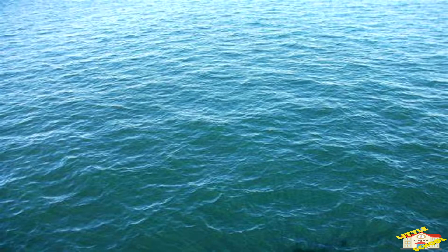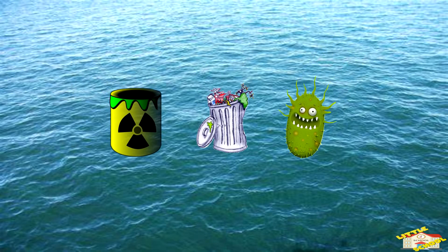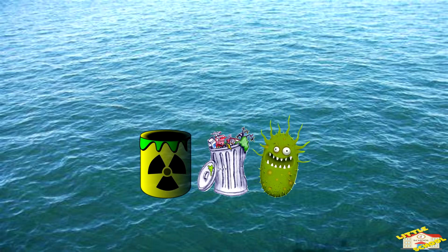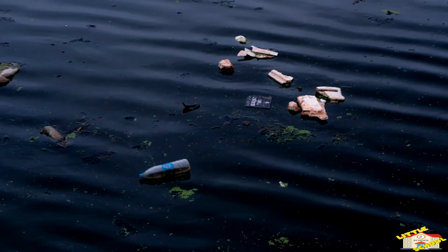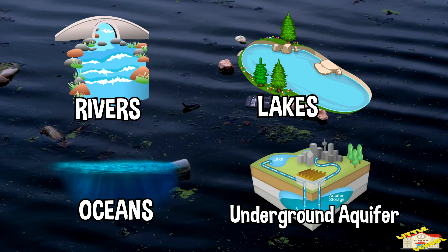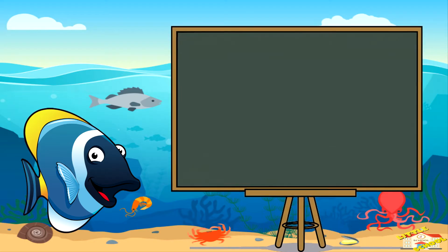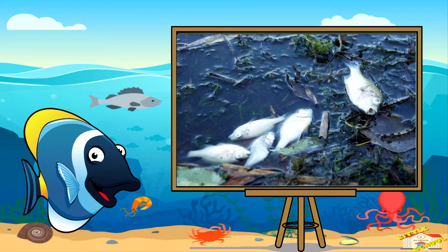Water pollution occurs when harmful substances such as chemicals, trash, or microorganisms contaminate bodies of water like rivers, lakes, oceans, or even underground aquifers. These contaminants can negatively affect the quality of water and harm the plants, animals, and people that depend on it.